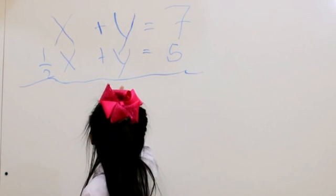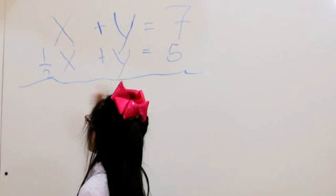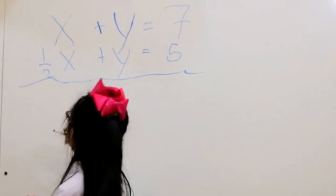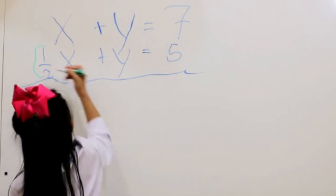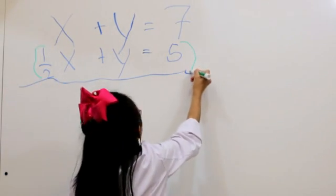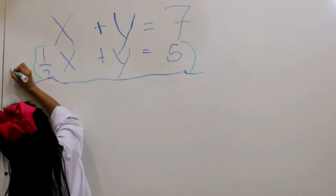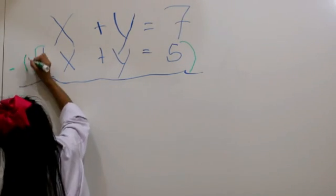I need to cancel out the y by multiplying the whole equation by negative 1. So you put parentheses around the equation and put a negative 1 beside it. Make the negative 1 clear.